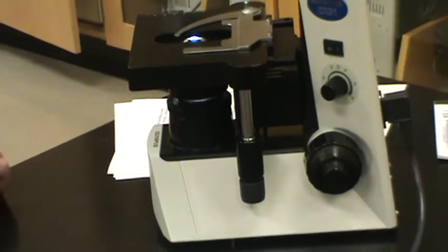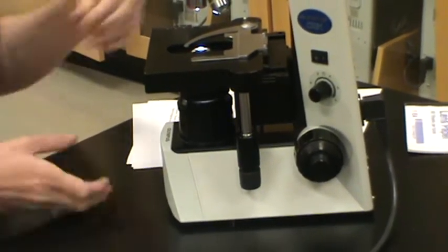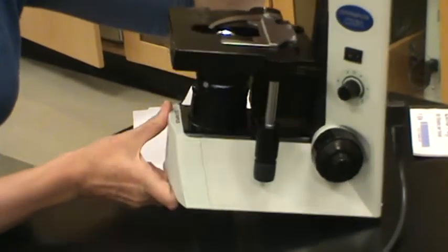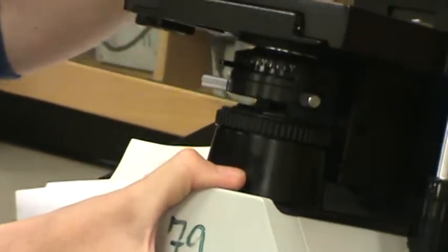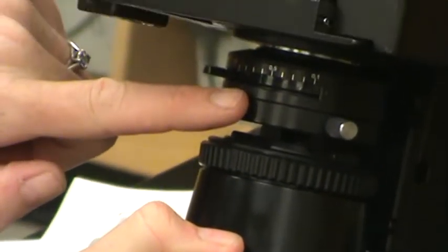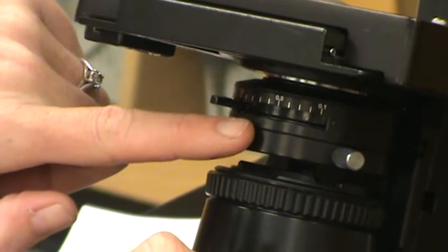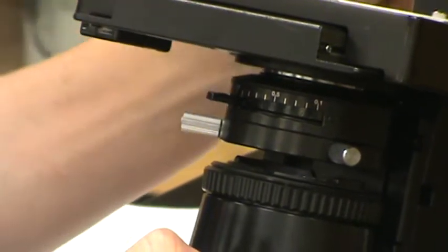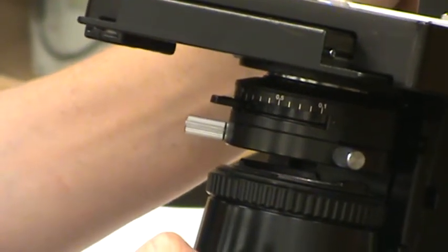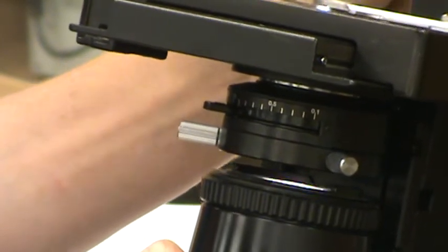The next important piece of the compound light microscope is the condenser. I'm going to lift this up so you can get a good look at that piece. It's here. The condenser literally condenses the light from the light source towards the specimen and in doing so helps to focus the light.